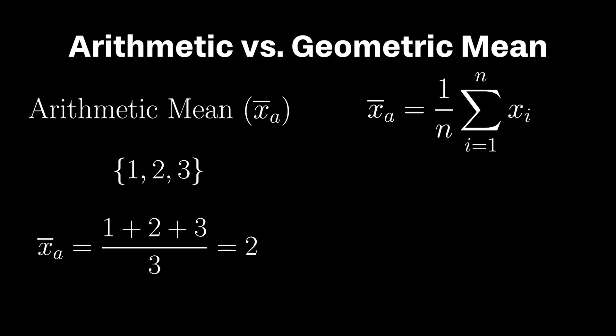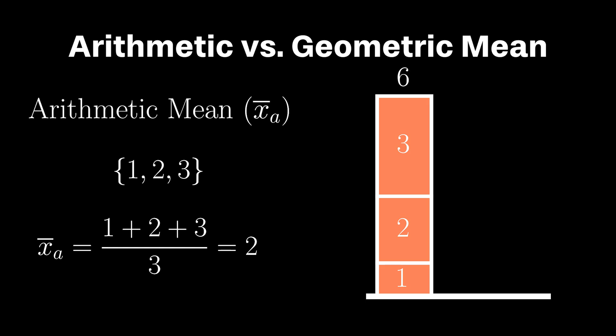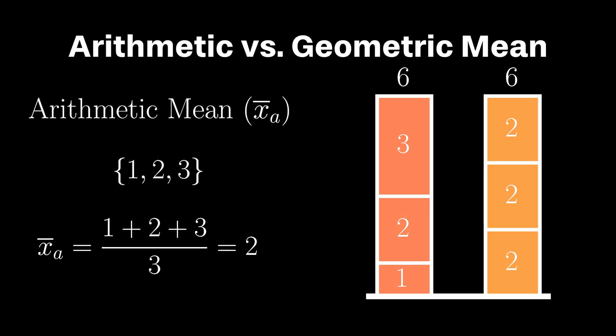Now a nice way I like to view the arithmetic mean is that if all observations had the same value, what value would yield the same observed total, in this case 6? And for this problem, the answer would be 2.